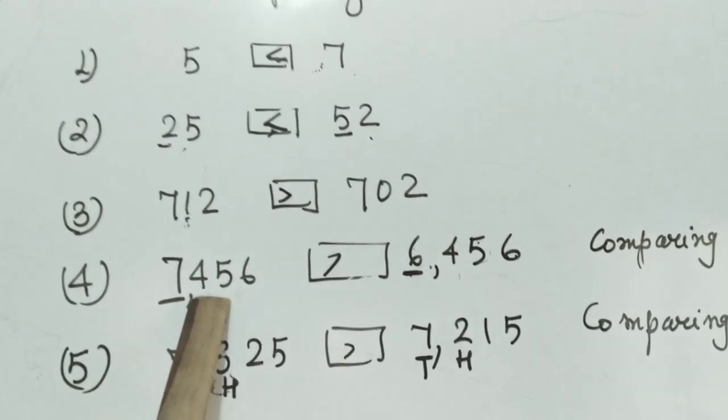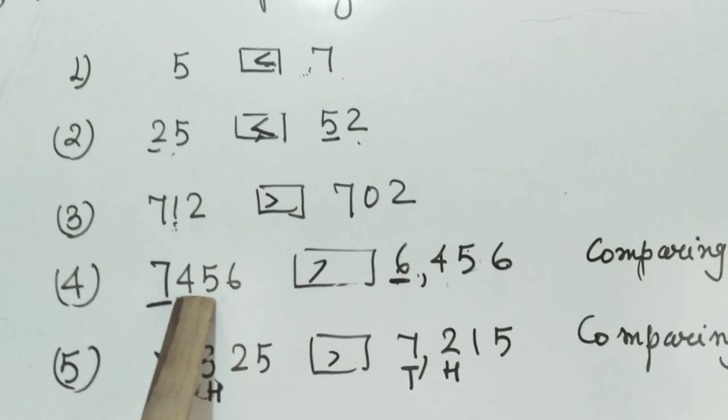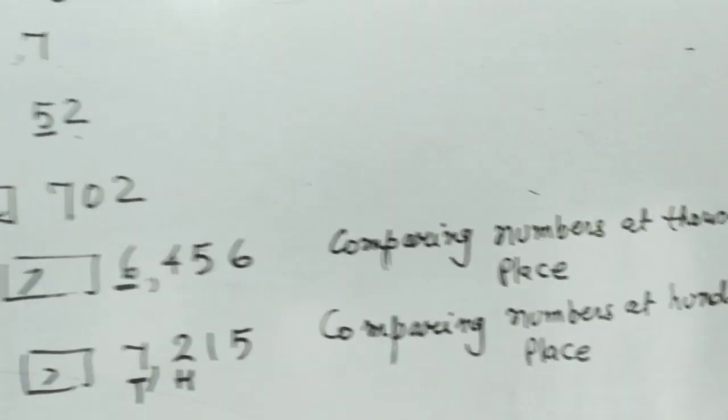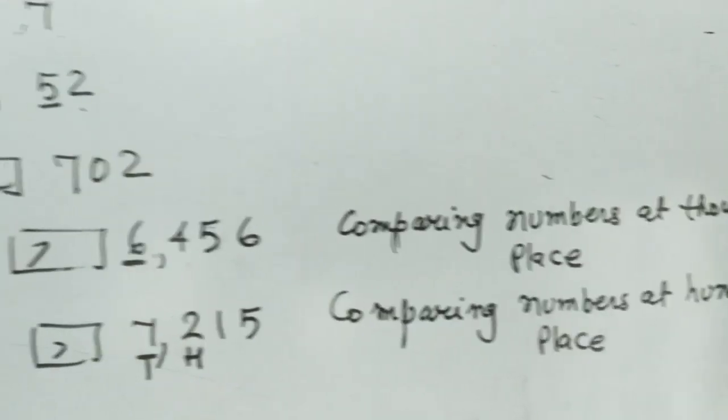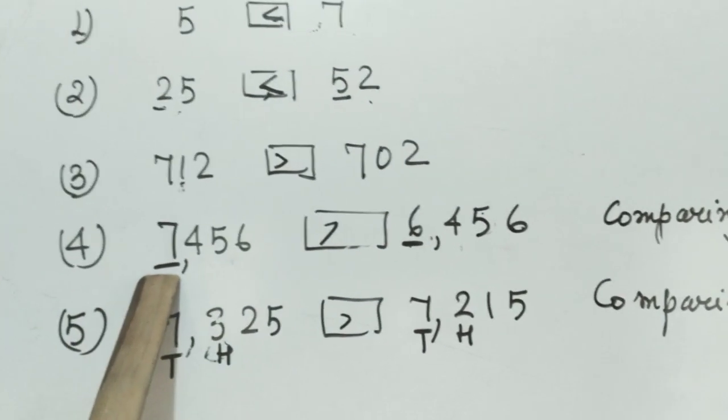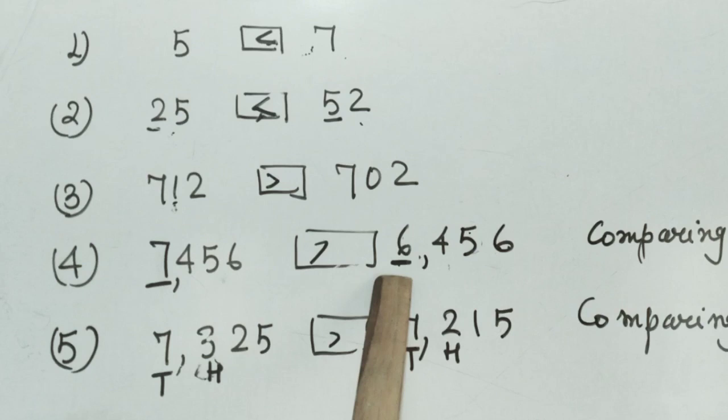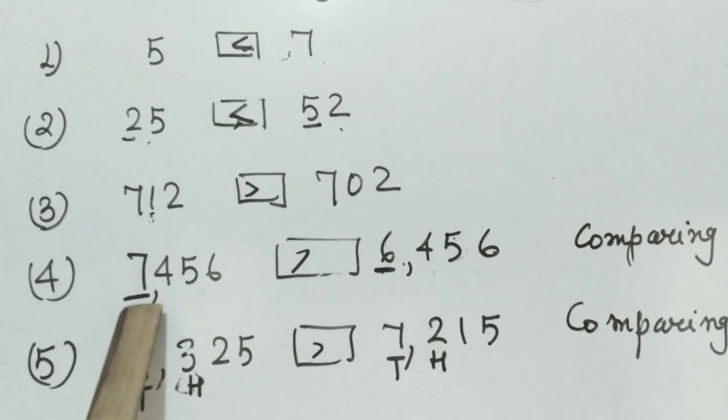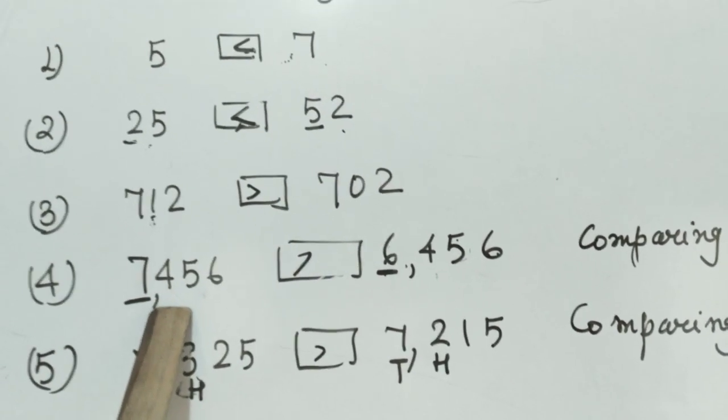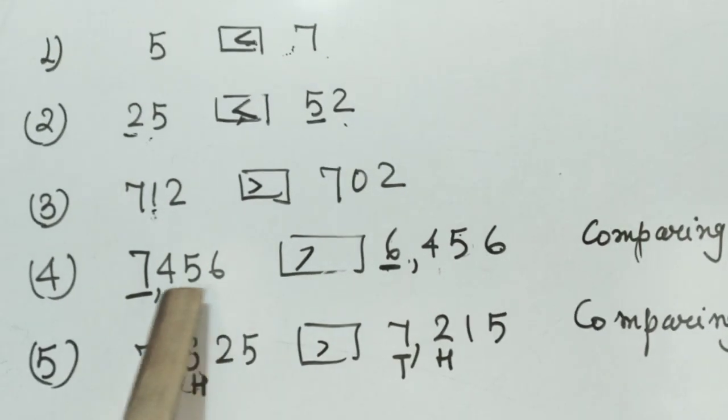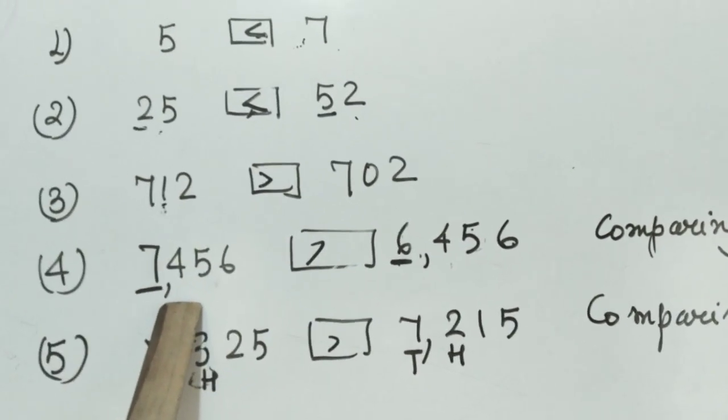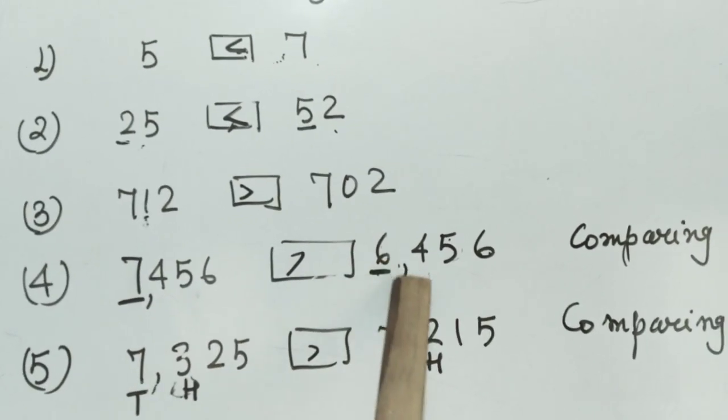Now, it is a 4-digit number. We are comparing numbers at the 1000th place. Here at the 1000th place, we see 7. Here it is 6. 7 is greater than 6. Therefore, this one is greater than this one. 7456 is greater than 6456.